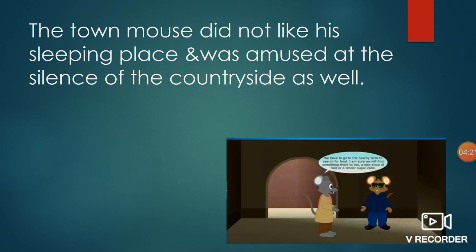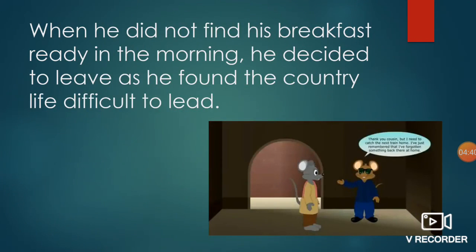The town mouse was very tired and wanted to sleep. The country mouse showed a corner in the mouse hole and asked him to sleep there. The town mouse did not like his sleeping place and was amused at the silence of the countryside. Next morning, the town mouse found there was no breakfast ready. His cousin told him they had to go to the nearby farm to search for food. This was too much for the town mouse and he decided to leave, finding country life too difficult.